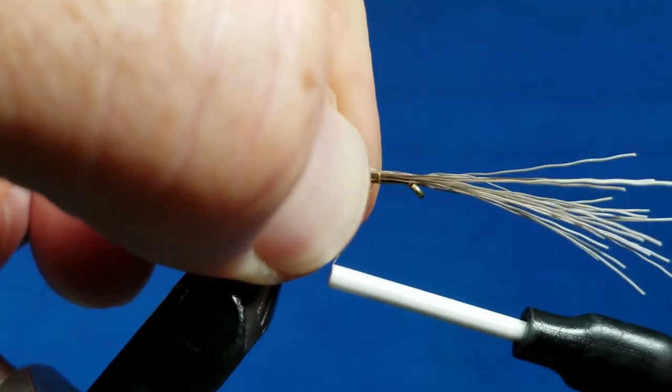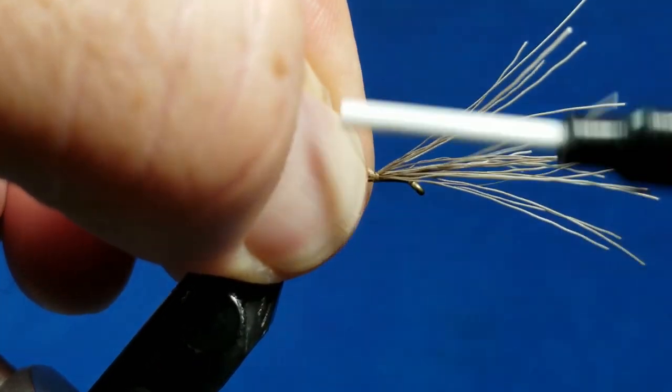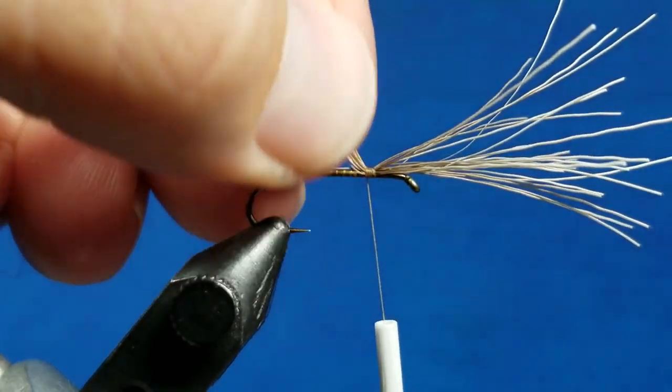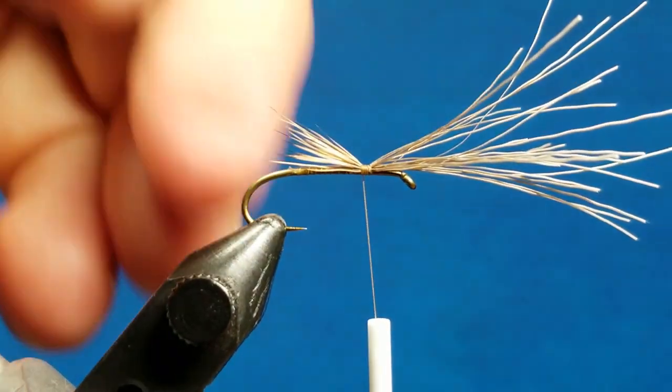As I wrap back over the top of it, I have thread wraps under there and that thread wrap is going to increase the friction and it's going to help bind and hold that in place where I want it.